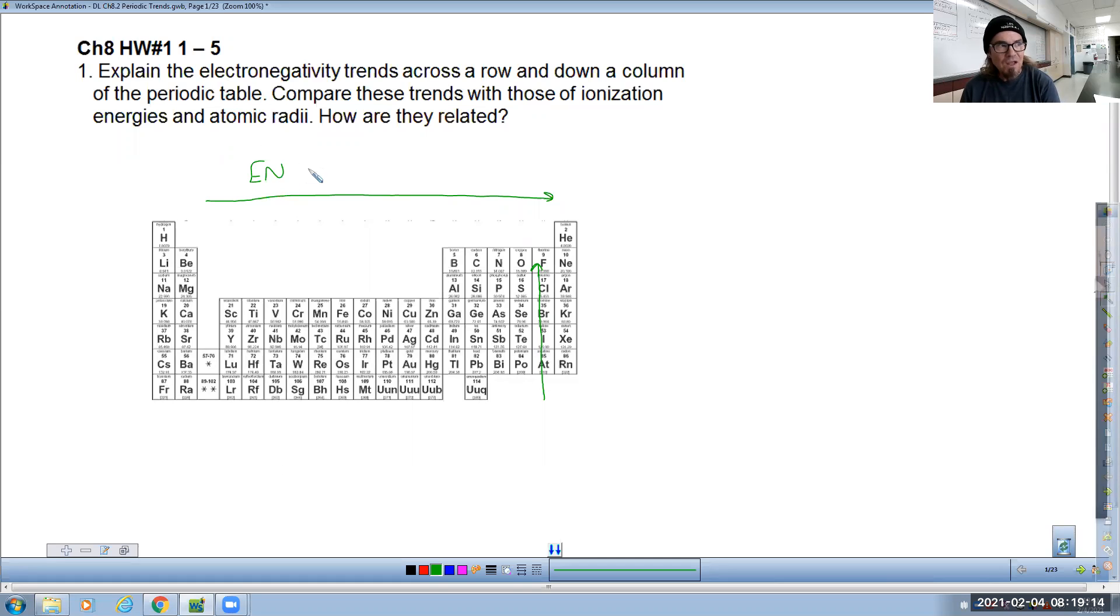So we can say that electronegativity, ionization energy, and electron affinity increase as you go this way and as you go this way. Meanwhile, atomic radii decreases as you follow those trends. And we're supposed to recognize why those four things go together, or I should say, why do the three green things go with the pink thing?